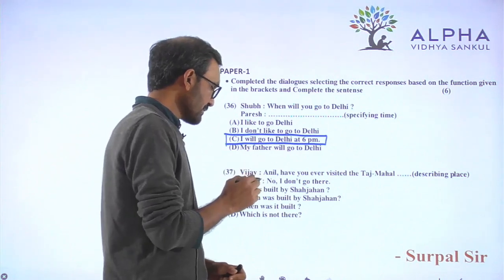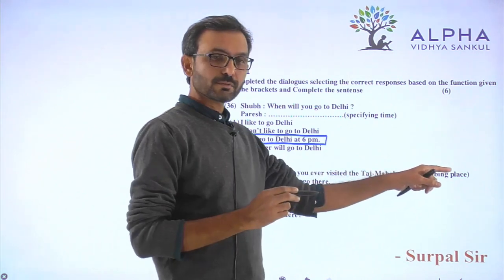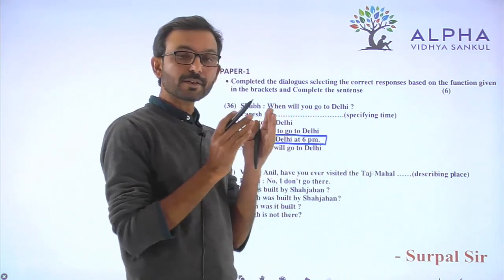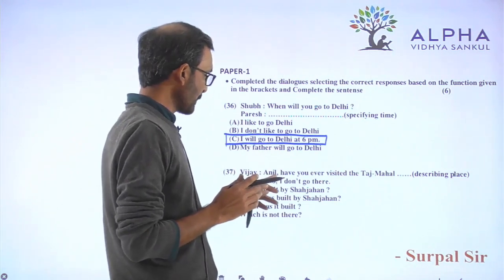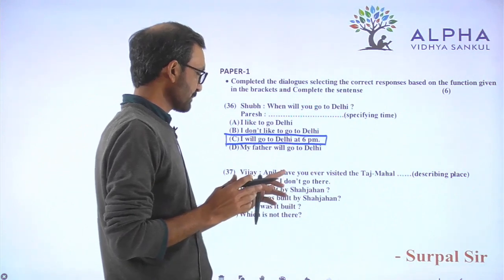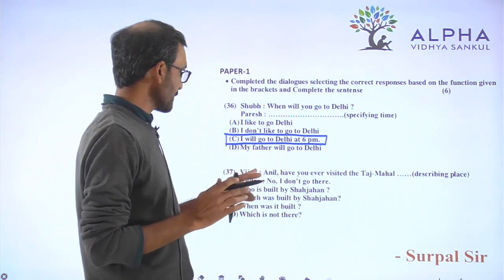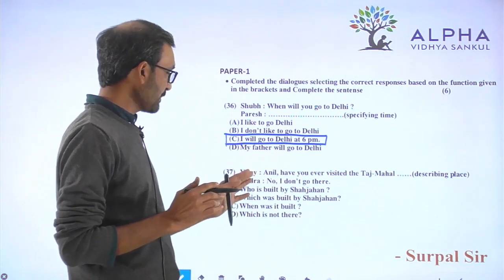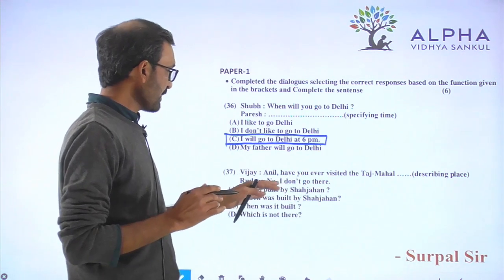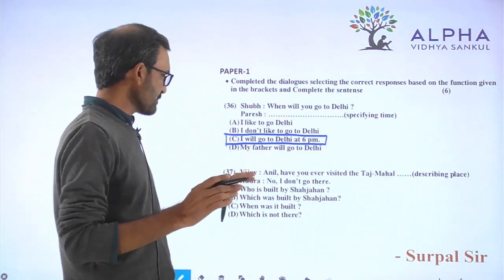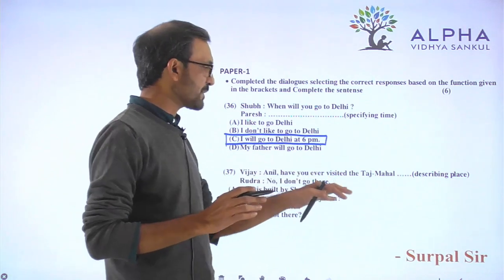Question 37: 'Vijay, have you ever visited the Taj Mahal?' The options include 'No, I don't go there' and 'We don't go there.' There is Anil, there is a Rudra — so we understand there are changes in the name. Rudra: 'Have you ever visited the Taj Mahal?'